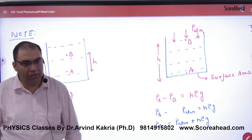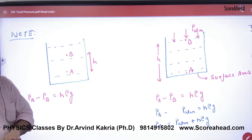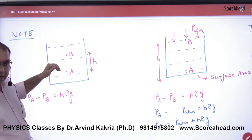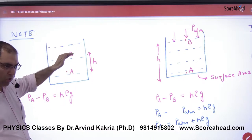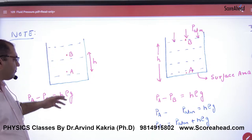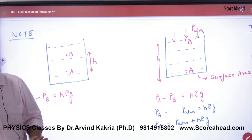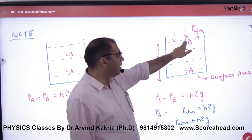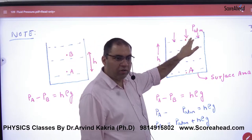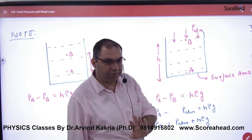The first point is that if A and B are two points, A will have more pressure, B will have less pressure, and what is the difference between A and B? H-ρg. Point number two: B is the top surface and what is the pressure here? Atmospheric.